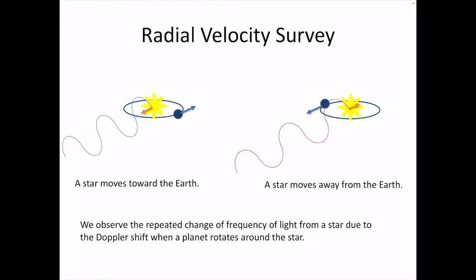When a star is moving toward us, the light from the star is blue-shifted. If the star is moving away from us, the light emitted from the star is red-shifted. The Swiss group successfully discovered the first extrasolar planet using the radial velocity method.